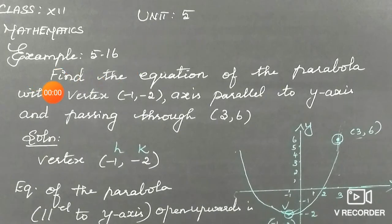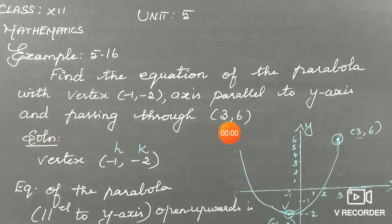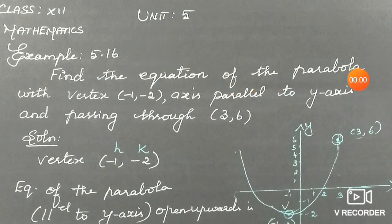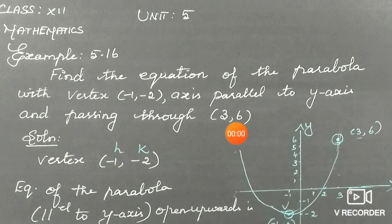Unit 5, Example 5.16: Find the equation of the parabola with vertex (-1, -2), axis parallel to the y-axis, and passing through (3, 6). For a parabola with axis parallel to the y-axis, there are 4 types — it can be open upwards or open downwards. By plotting the point (3, 6), we can determine which type it is.